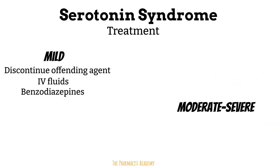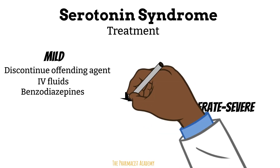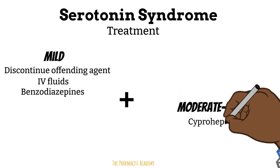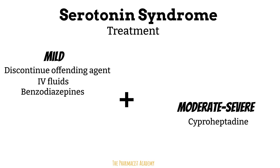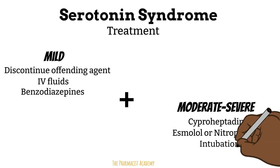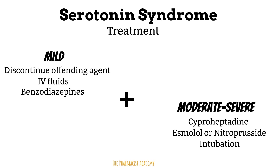For moderate to severe symptoms, we follow the same recommendations as for mild symptoms, plus the use of 5-HT antagonists such as cyproheptadine for severe agitation and hyperthermia, esmolol or nitroprusside for blood pressure management. Patients with temperatures over 106°F should be intubated due to the possibility of hyperventilation from such high temperatures and muscle rigidity.